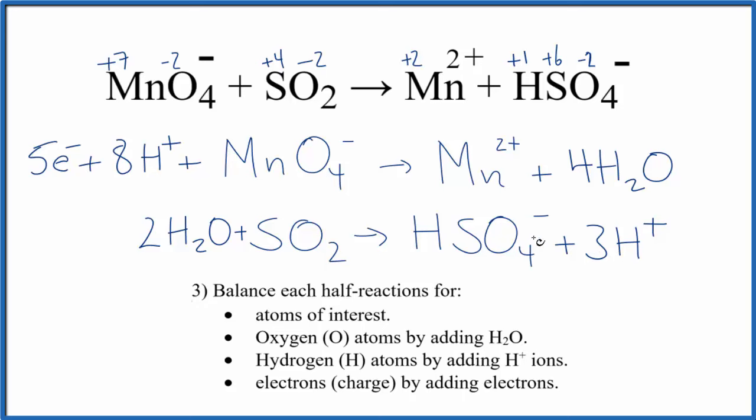Over here it's a little bit easier. We have a minus one on the ion and then three positive charges. Let's just add two electrons here, and now the charge on this side is balanced. We have a net charge of zero here and net charge of zero here.